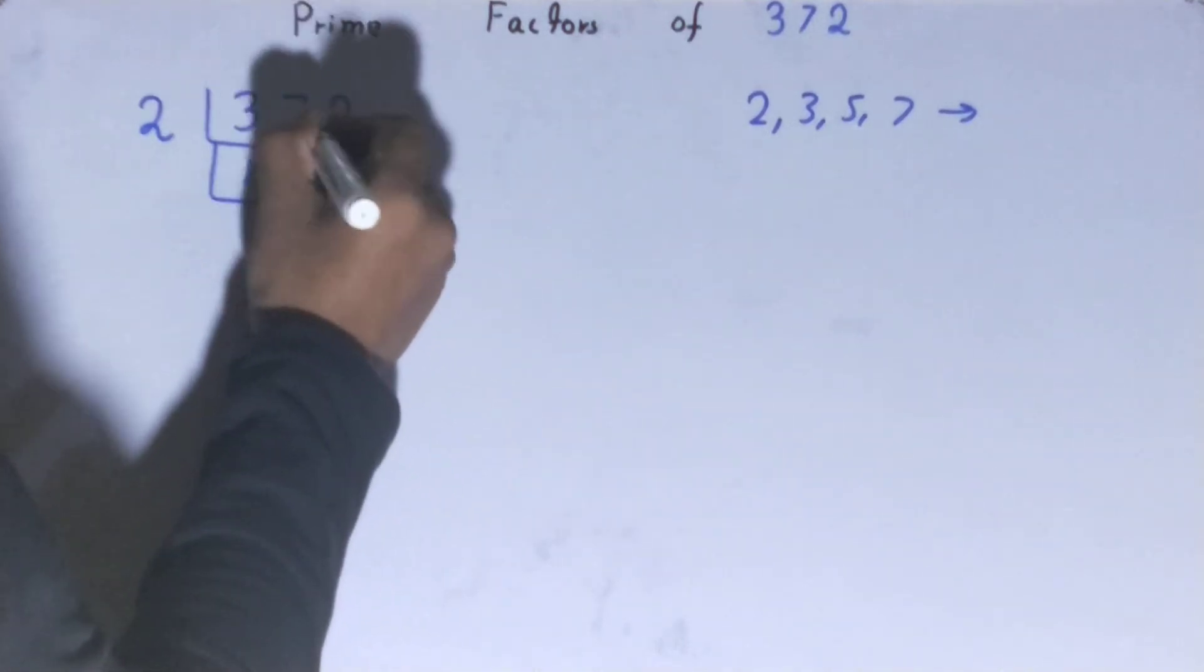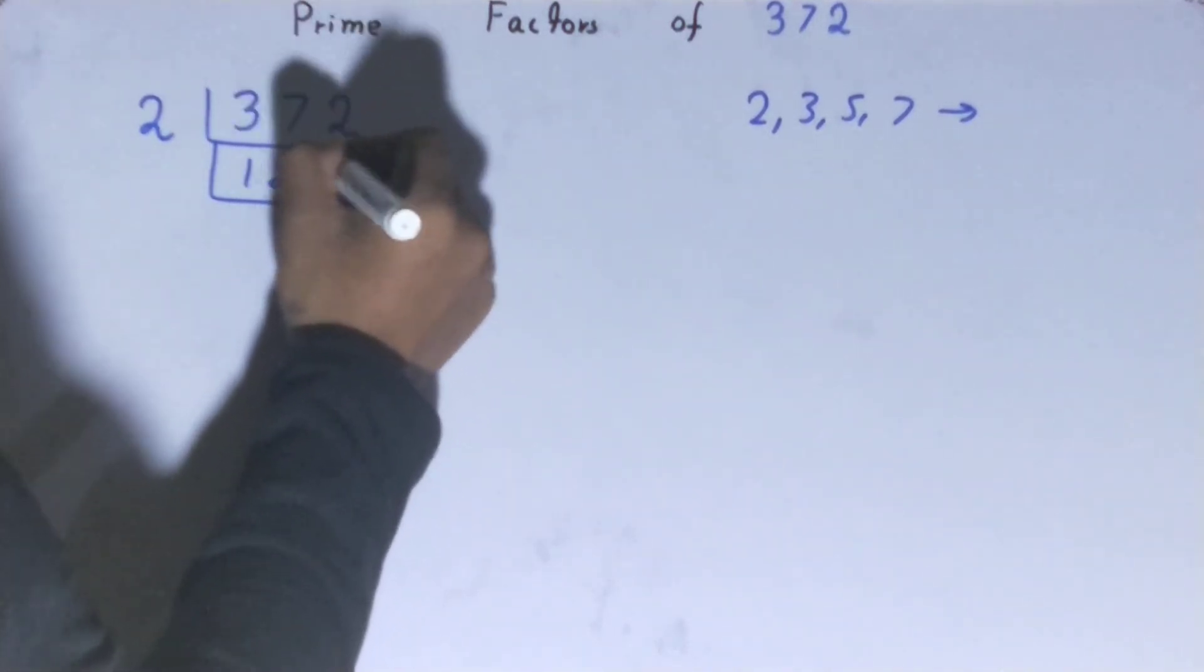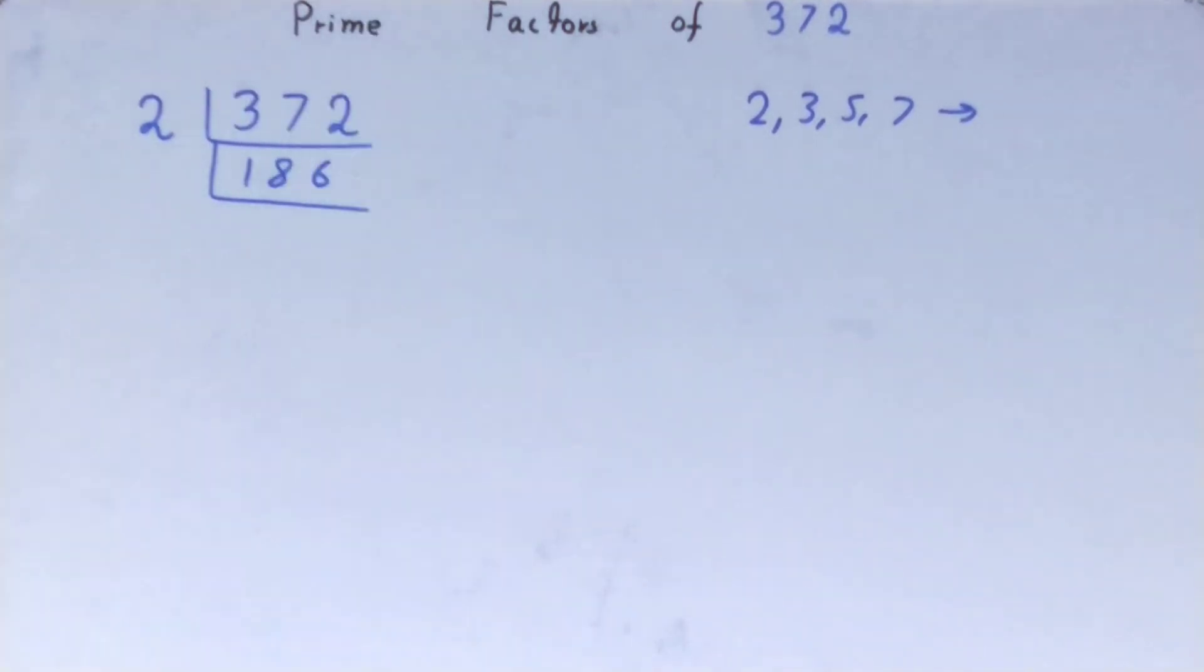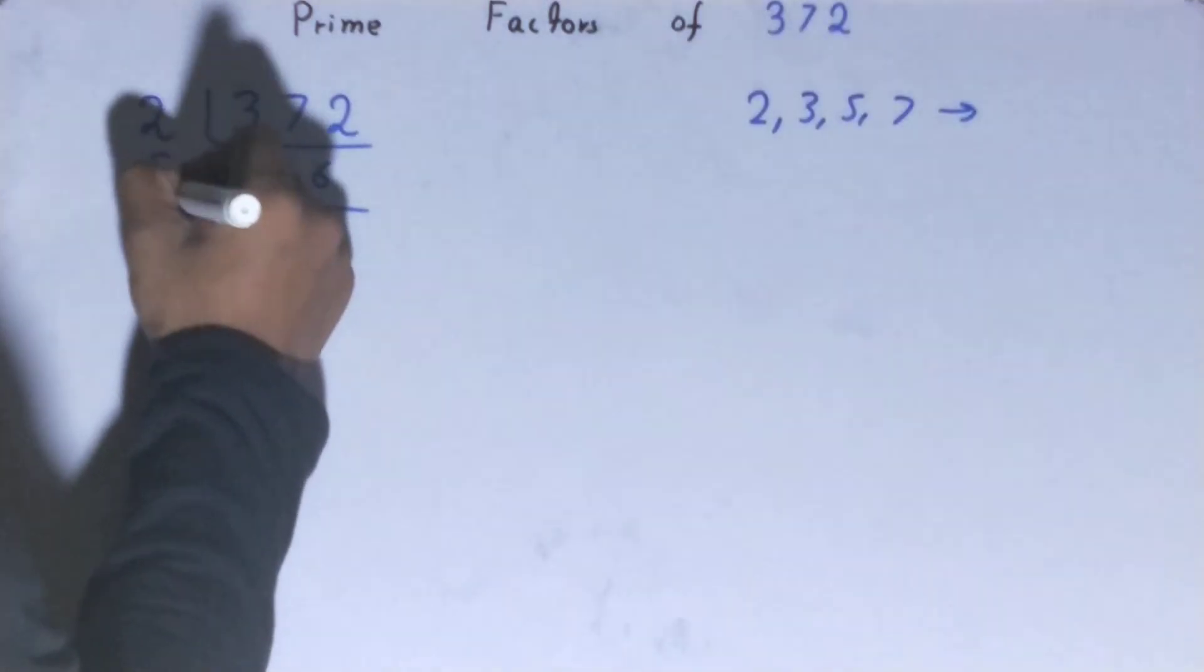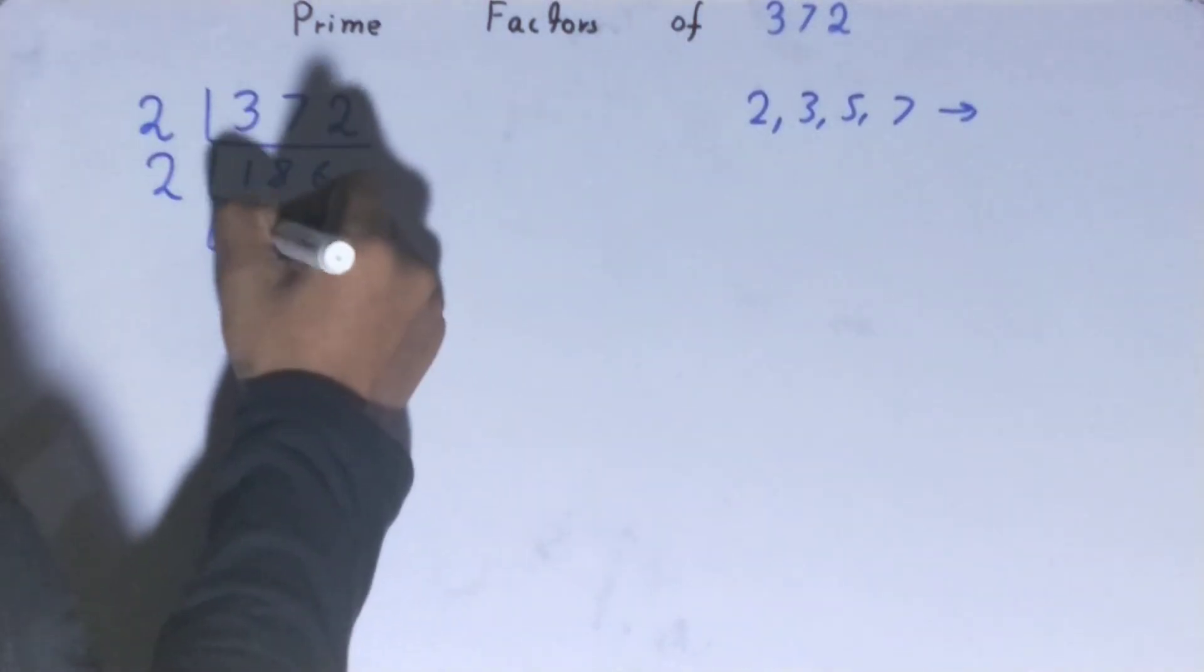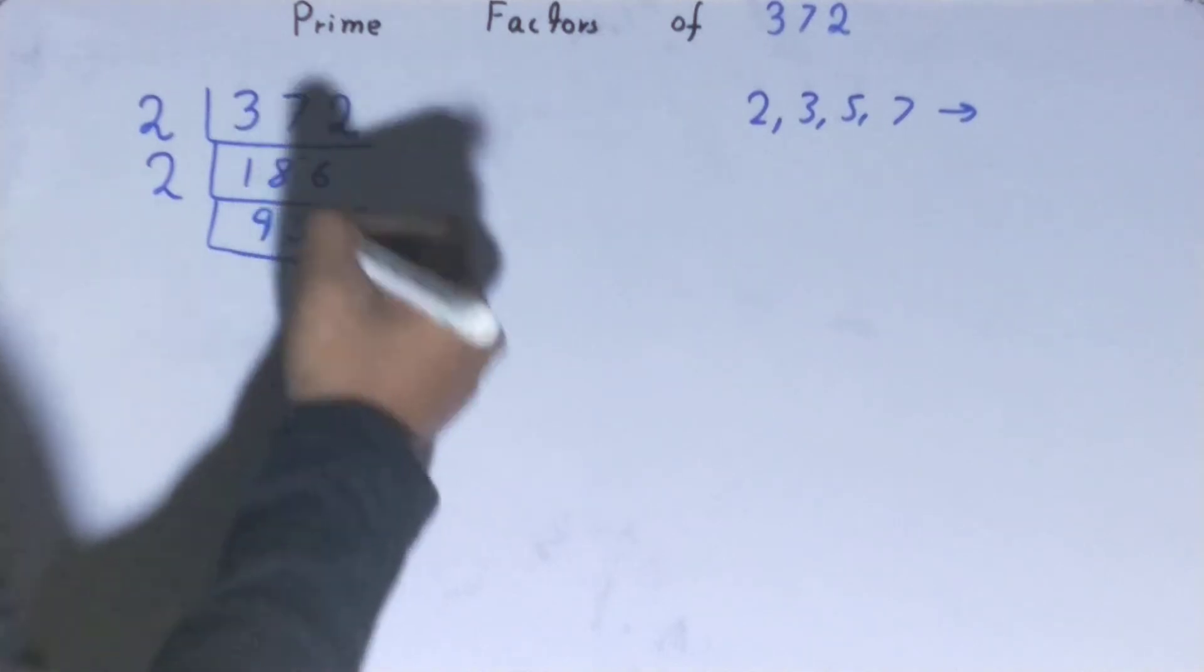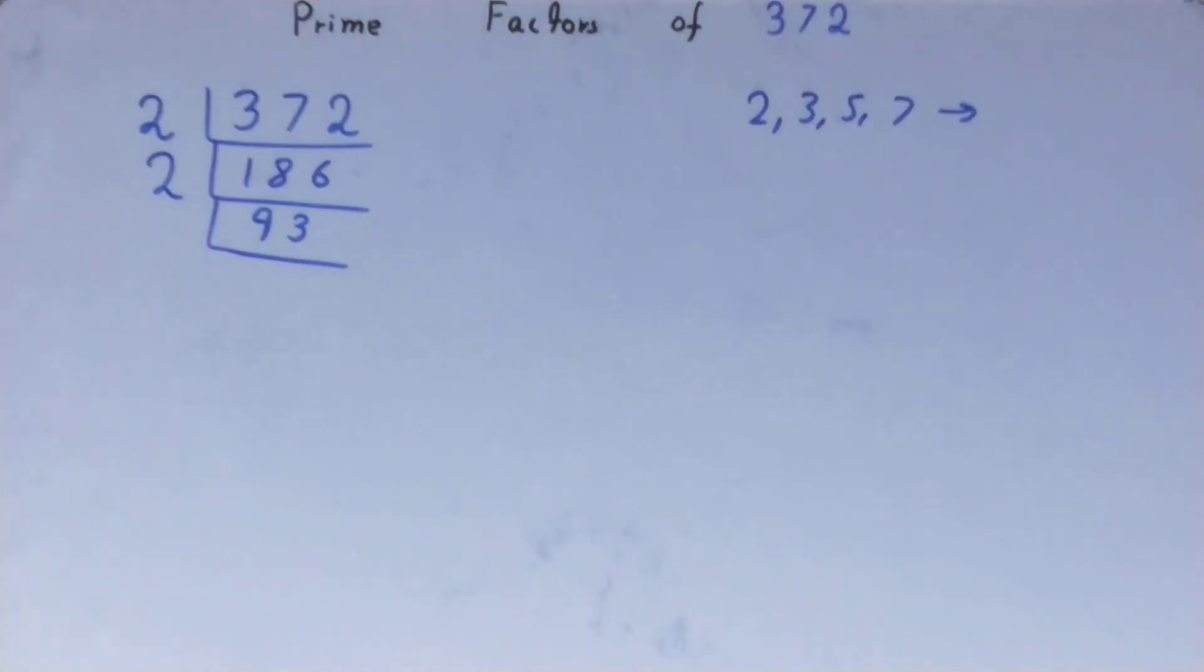Is this 186 divisible by 2? Yes, it is, so divide it. You get 93. Is this 93 divisible by 2? No, it is an odd number.